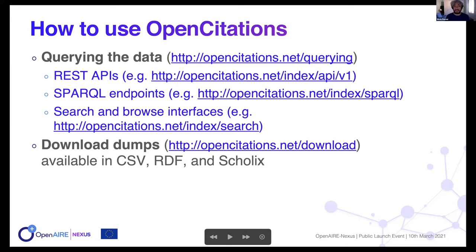There are different ways to use our citation data. The most used is the REST API — we have a bunch of REST APIs allowing access to different collections. There are also SPARQL endpoints for more complex queries upon this data, and of course dumps that are heavily used. We provide dumps in three different formats: CSV, RDF, and also Scholix.